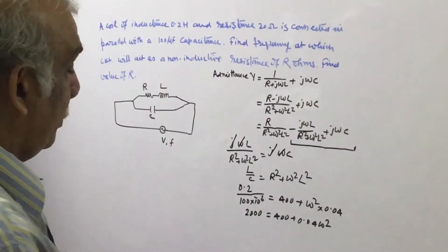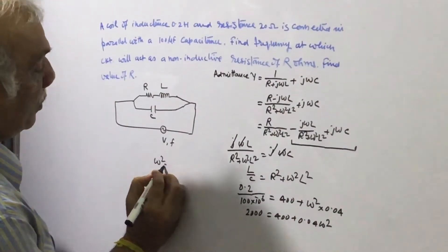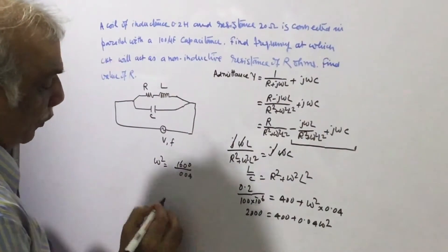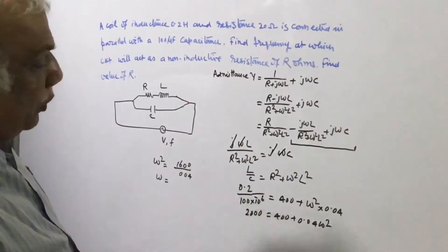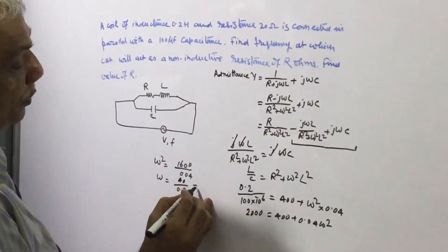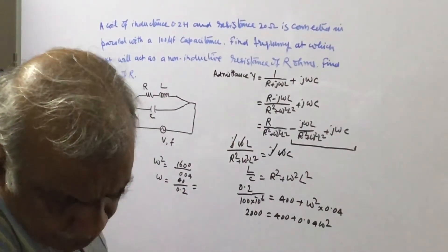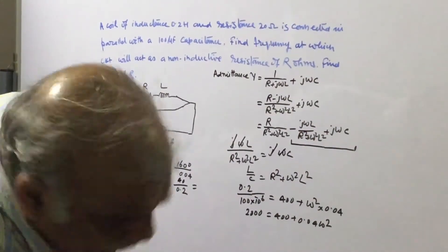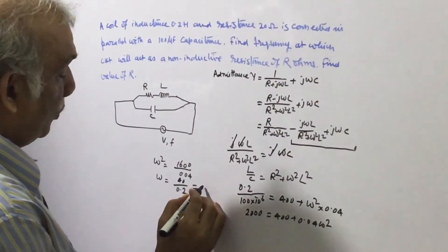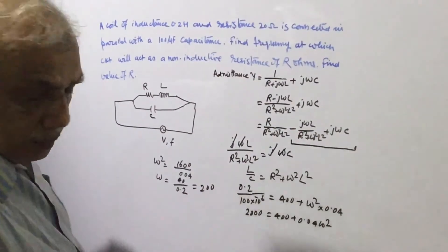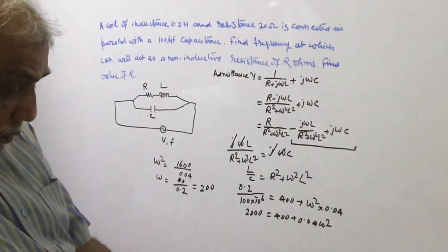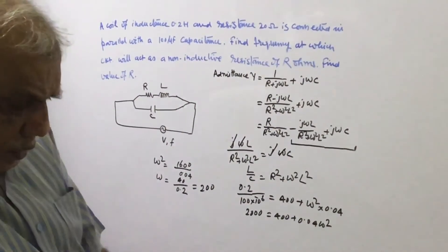So from here we can calculate this omega square, omega square is 2000 minus 400 is 1600 divided by 0.04 and omega becomes the square root: 1600 divided by 0.04 is 40,000 and this becomes 0.2. This becomes 200.